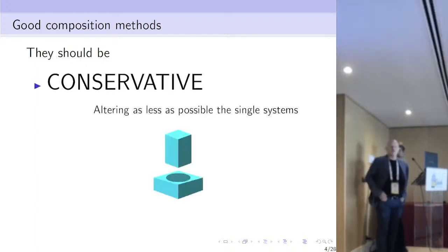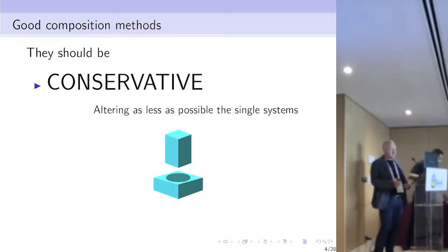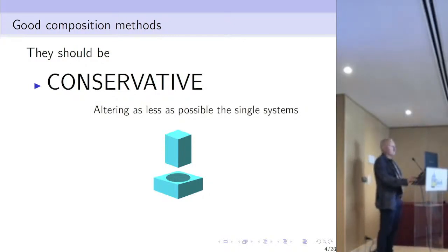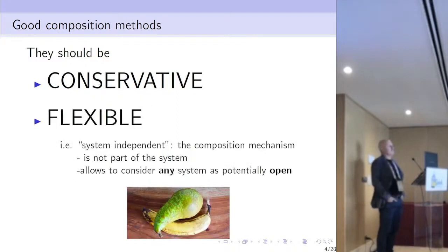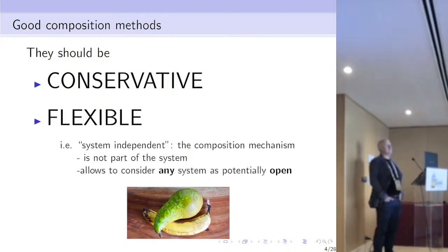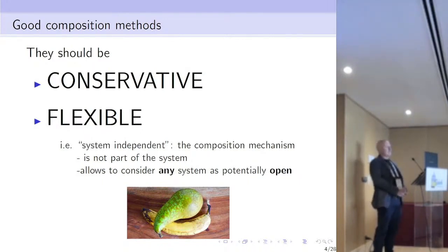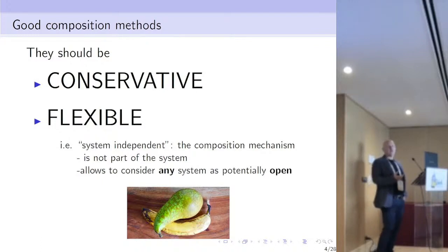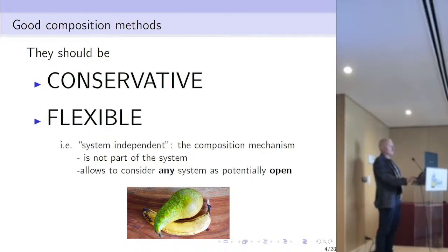A good composition method should be conservative: it should alter as little as possible the single systems we want to compose. It should be flexible, that is, system-independent — the composition mechanism should not be part of the system — and should allow composing also systems that are not developed to be composed, including closed ones.